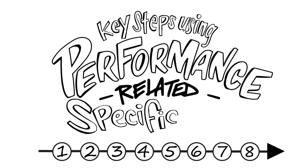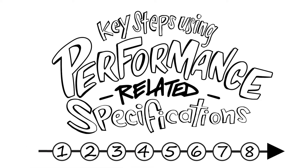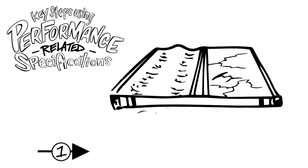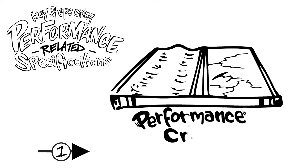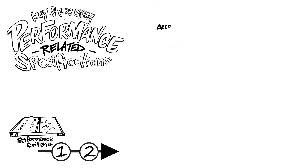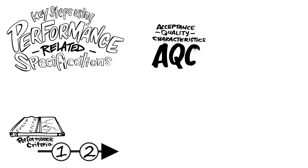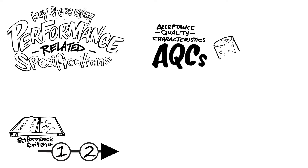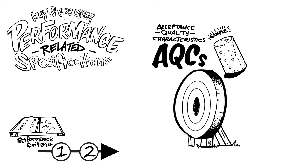The following are key steps involved in using performance-related specifications. Step 1: The first step occurs prior to project letting and includes establishing performance criteria in terms of the distress indicators to be modeled. Step 2: The agency identifies acceptance quality characteristics, or AQCs, that are to be evaluated, including the sampling techniques and test methods to be used. This step also includes establishing target values for each AQC.